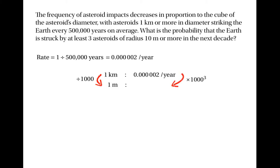So we need to multiply the rate of 0.000002 per year by a factor of 1,000 cubed, and that gives us the rate 2,000 per year. So now we know that asteroids of diameter one metre strike the Earth at a rate of 2,000 every year.